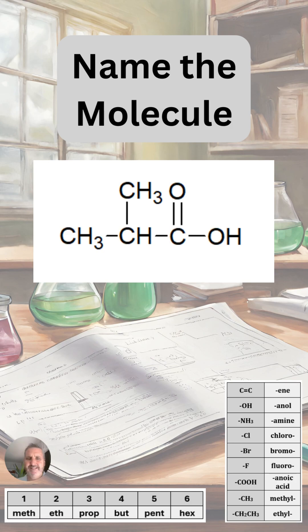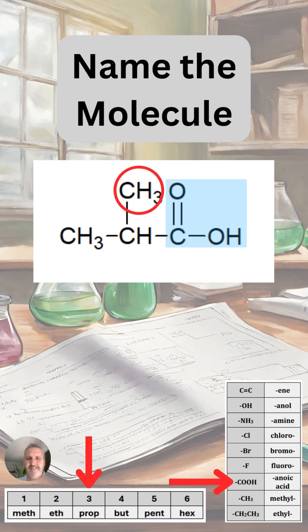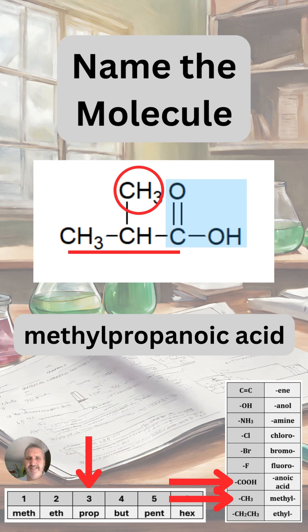Let's have a look at this interesting molecule. We can see that there are three carbons in the longest chain. There is a functional group on the right — a carbon double bond oxygen and a carbon joined to an OH — which is the carboxylic acid functional group, so the name will end in '-anoic acid'. We also see a methyl branch coming off the second carbon. With three carbons in the longest chain, the main part of the name is propanoic acid, and we have a CH₃ coming off the second carbon. It could be called 2-methylpropanoic acid; however, we don't need the '2' because a methyl group can only come off the second carbon.